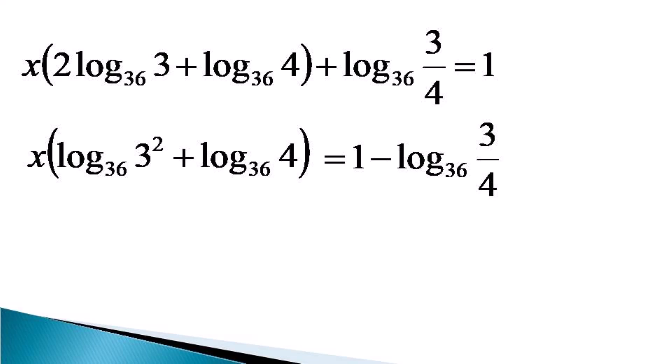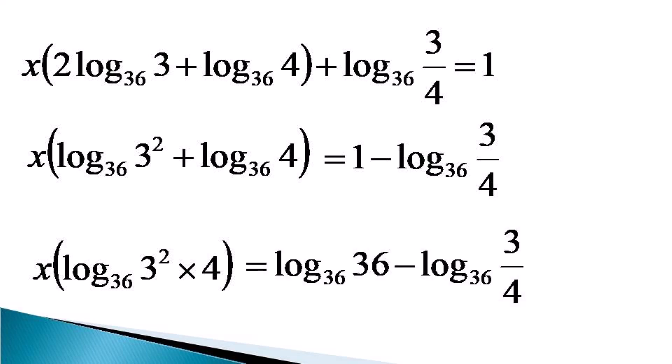Now the left hand side becomes simply x log 3 squared times 4 to the base 36, and it becomes equal to—in the constant part, I think we should have kept it as log 36 to the base 36 to make it easier.